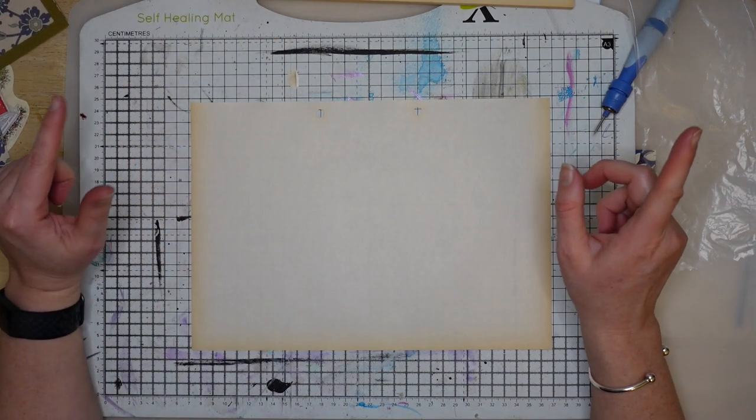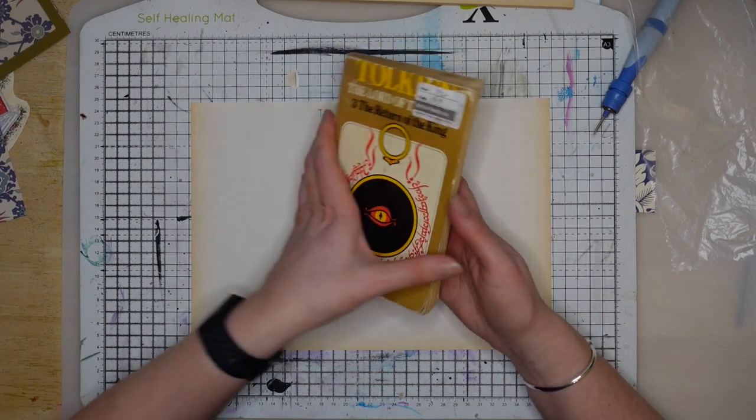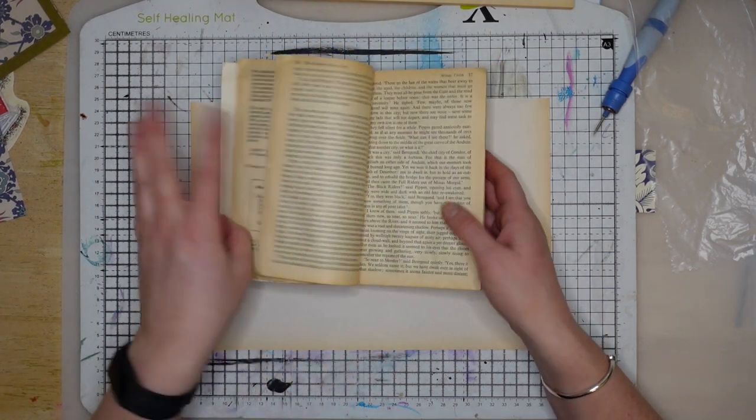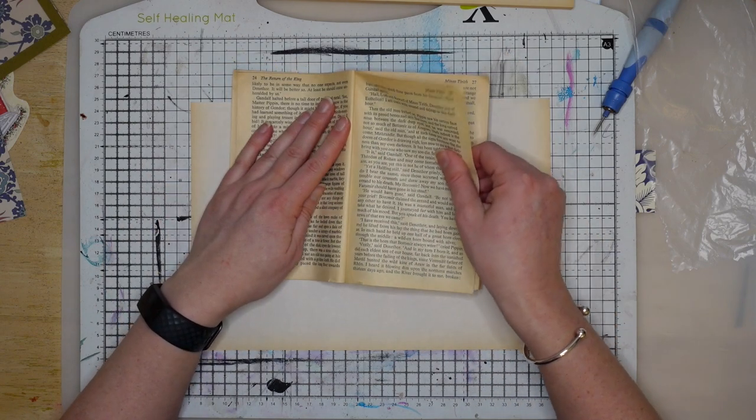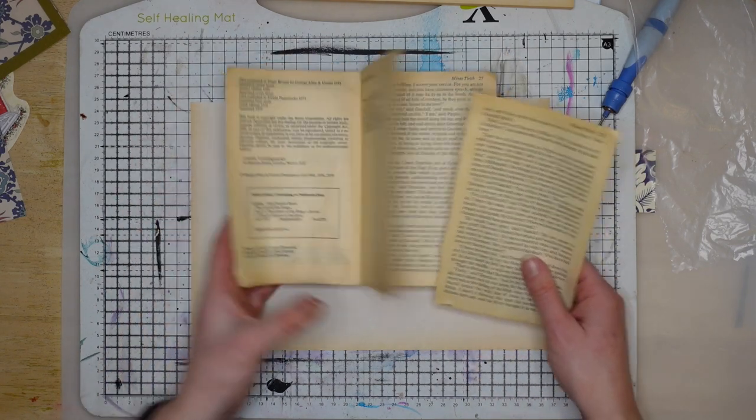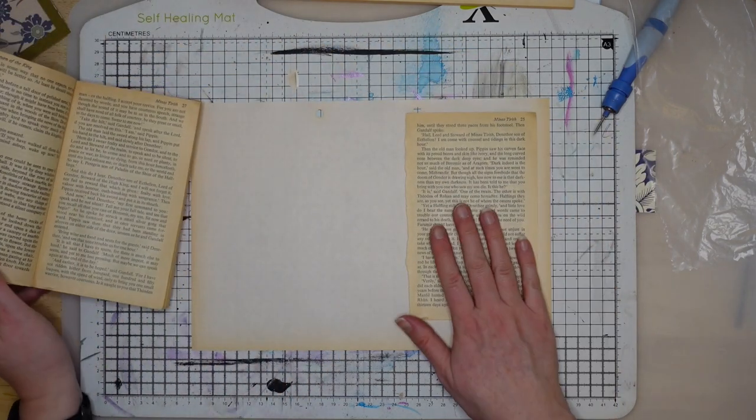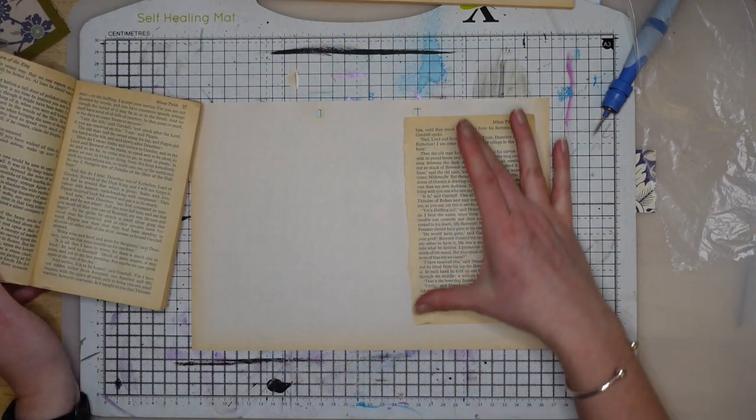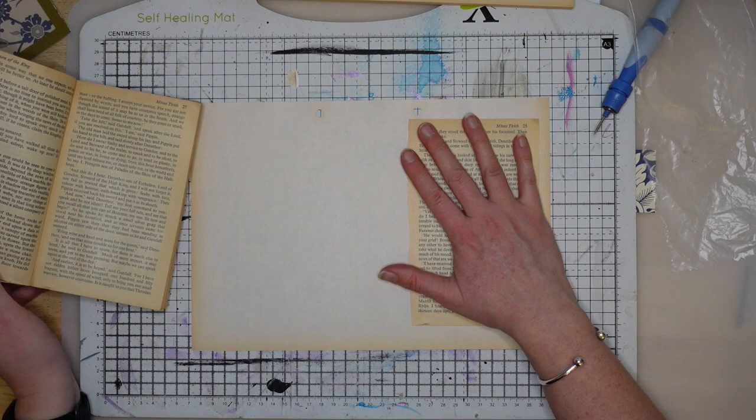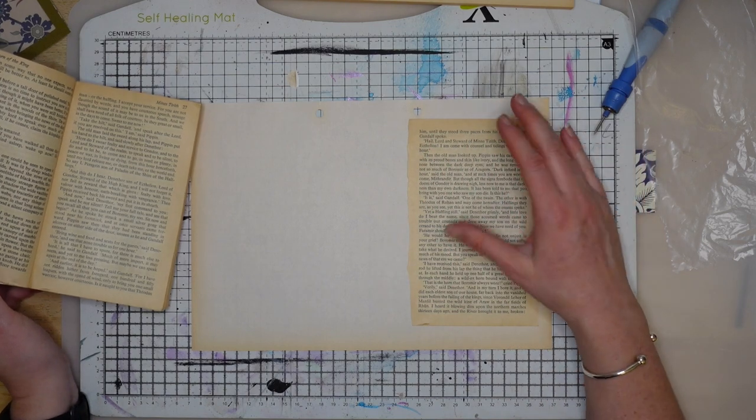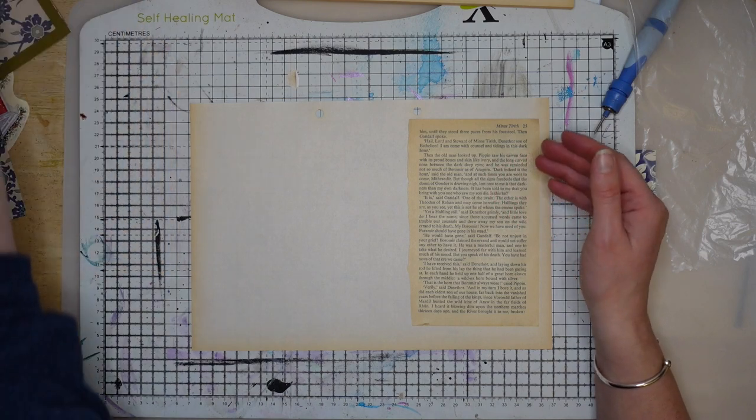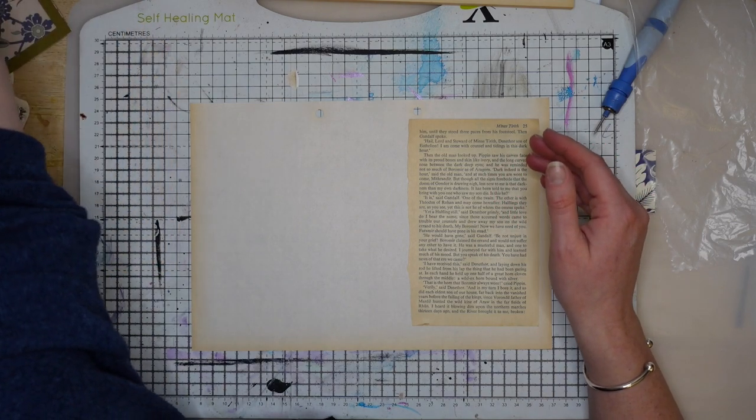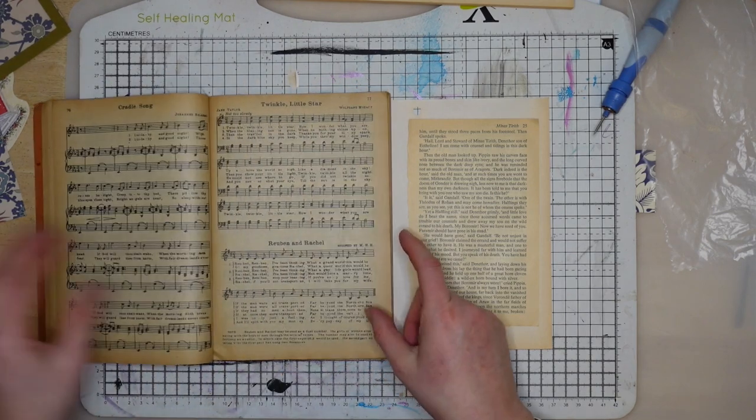The first thing I'm going to do is mount some of these book pages, actually just one book page. I'm going to back this with plain paper so that it makes it a bit stronger. You could use design card if you wanted to, but if it's something thinner then you're probably going to want to make it thicker somehow by doing something like this.